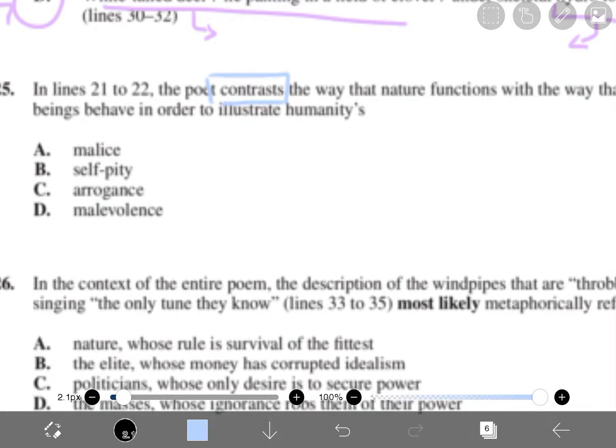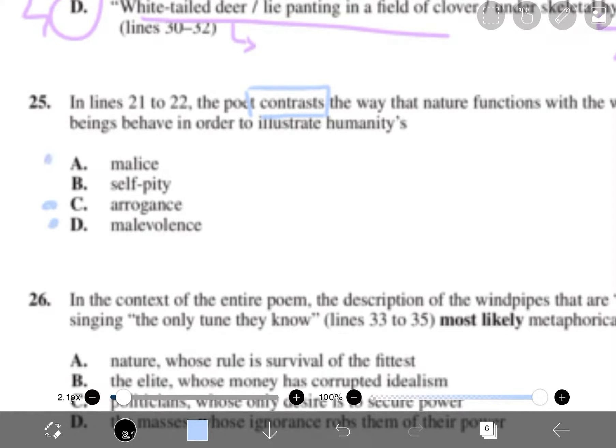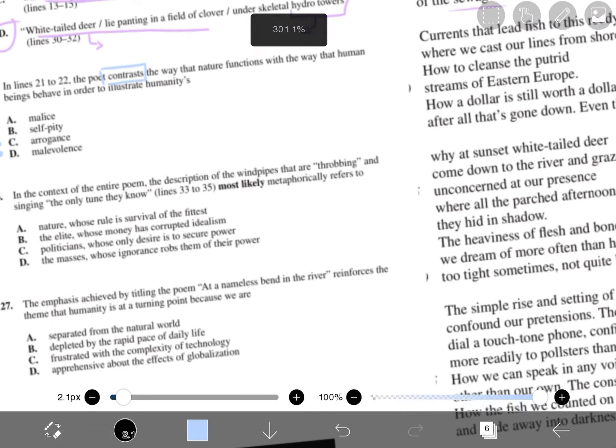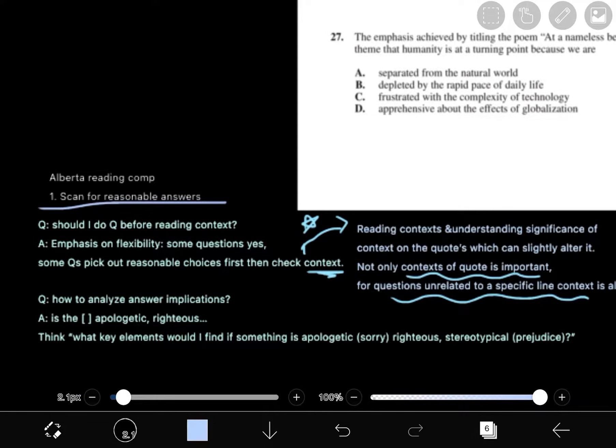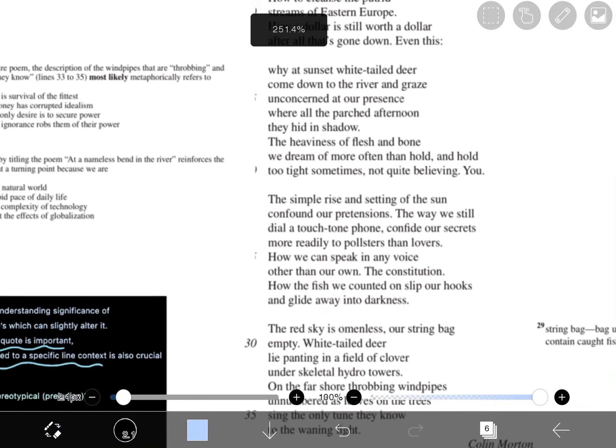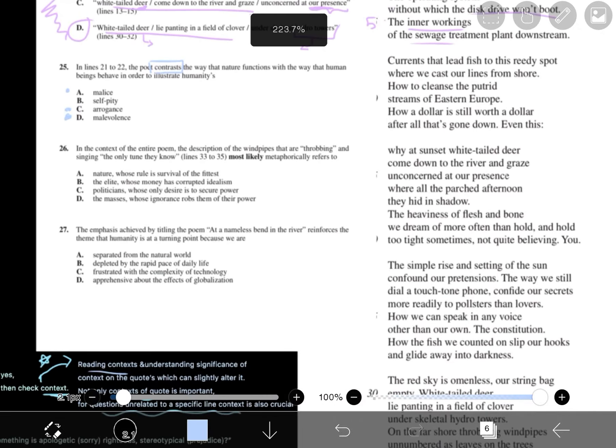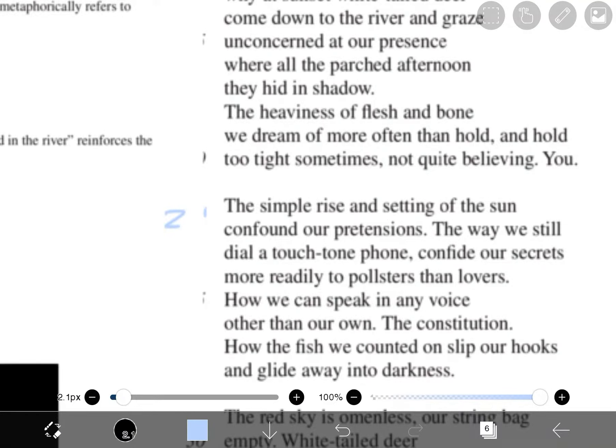Malice, self-pity, arrogance, malevolence. It definitely has something of a negative connotation if you want to contrast nature and humans. It's probably criticizing humans. Now, let's check the line 21 to 22. So, you see what I did here was I scanned for reasonable answers and then I checked the context. 21, 22.